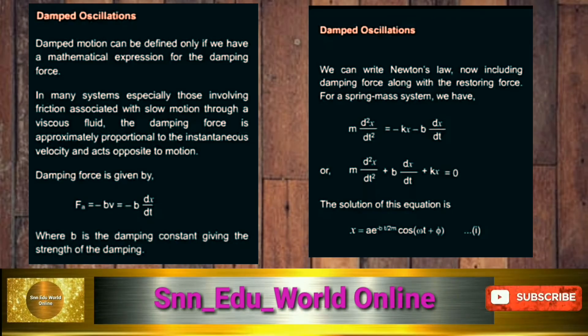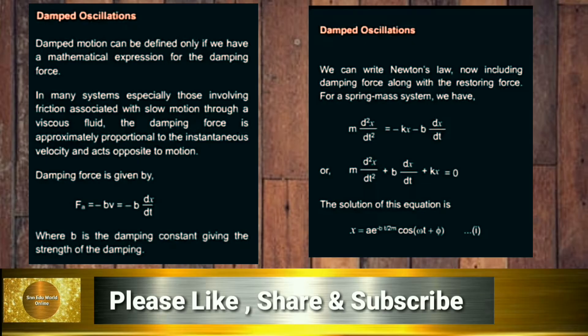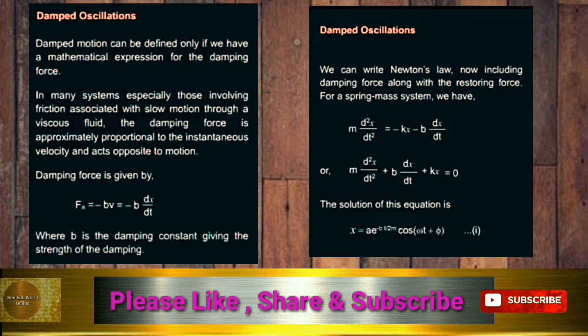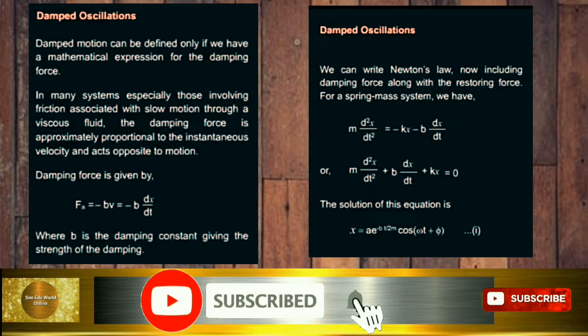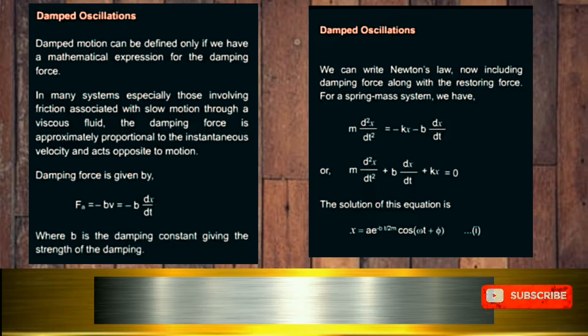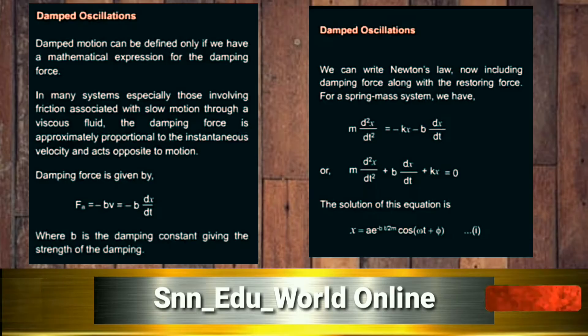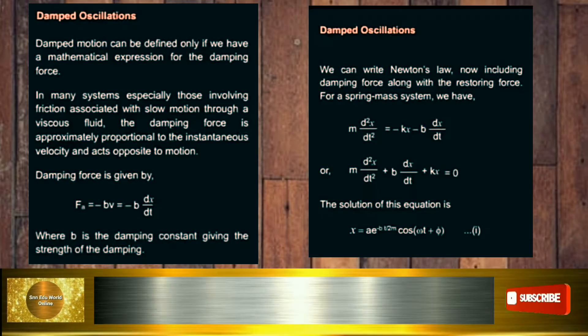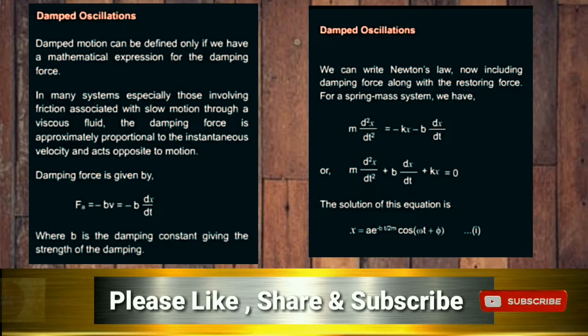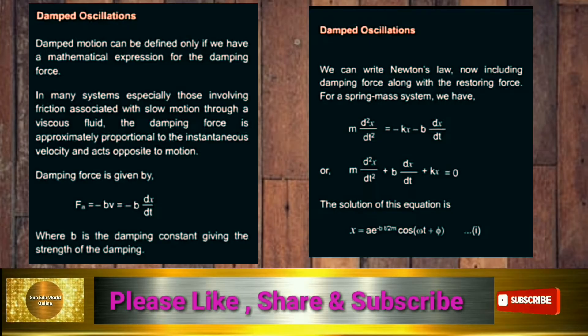When we rearrange this equation we get m d²x/dt² + b dx/dt + kx = 0. This is the differential equation for damped oscillation. If we solve this, the solution is x = A e^(-bt/2m) cos(ωt + φ).